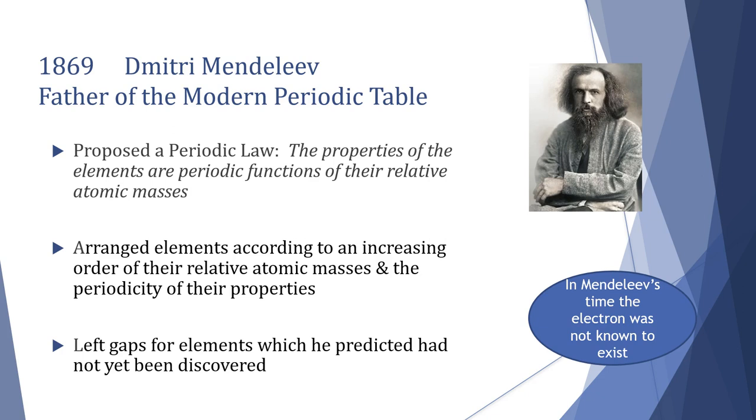He arranged the elements according to an increase of their relative atomic mass and the periodicity of their properties - these repeating properties that he was observing from these elements. He left gaps for elements which he predicted had not yet been discovered. In Mendeleev's time there were 63 elements that were known and he basically grouped them according to their chemical nature or properties.